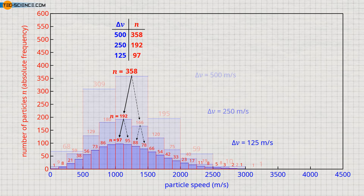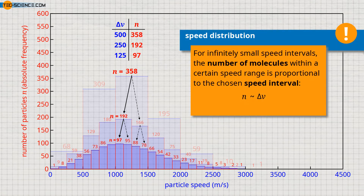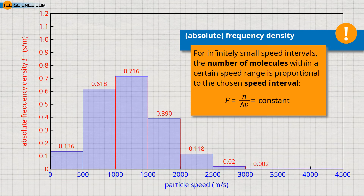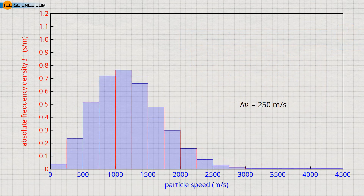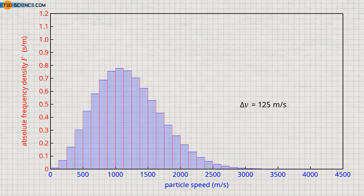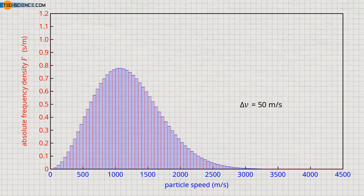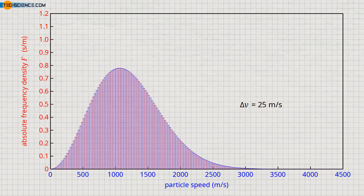Thus, the height of the original bar decreases by half with each time the speed interval is halved, because on statistical average, when the interval is halved, half of the molecules have a higher speed and the other half have a lower speed. Note that, strictly speaking, this proportionality applies only to infinitely small intervals. For a more general representation of the speed distribution, one can use the fact that the speed interval and the number of molecules in it are proportional to each other. The quotient of the number of molecules and the speed interval is then constant and no longer dependent on the chosen speed interval itself. This quantity is also called frequency density — it describes the number of molecules per unit interval width. For an infinitely small interval width, one finally obtains a continuous curve, which is independent of the interval width.